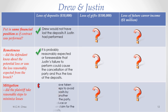Regarding mitigation for the $10,000 deposits claim, Drew could have taken reasonable steps to avoid losing the deposits by trying to find another performer for the party. If she had done that, it could have reduced or eliminated her claim for the loss of the deposits.